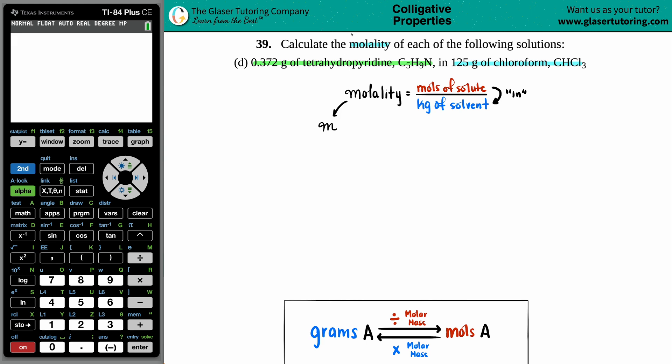So now they did tell us that the C5H9N is in the chloroform, which is the CHCl3. The solute always goes in the solvent. So with this wording, the C5H9N should be the solute. And since it's going into the chloroform, which is CHCl3, that's the solvent.